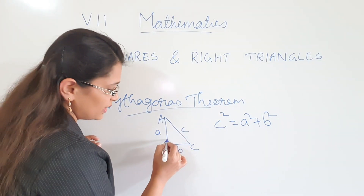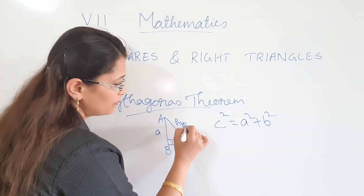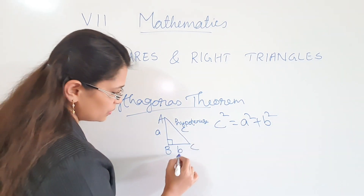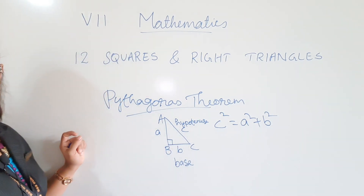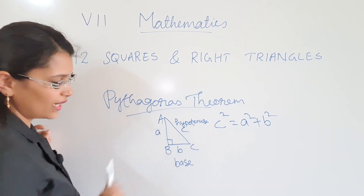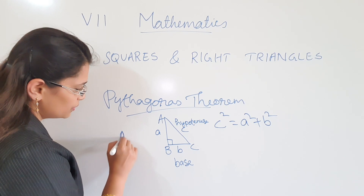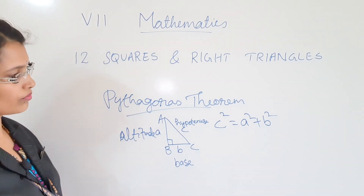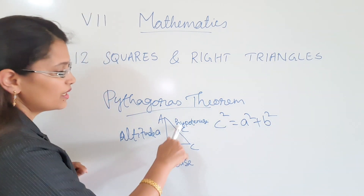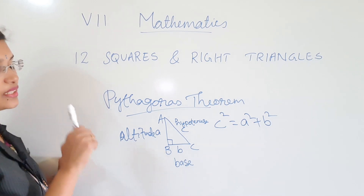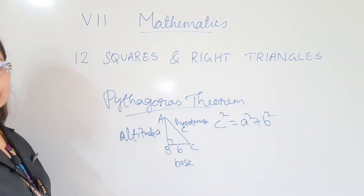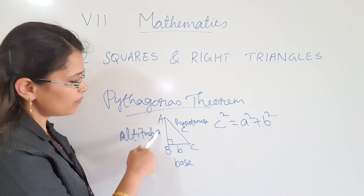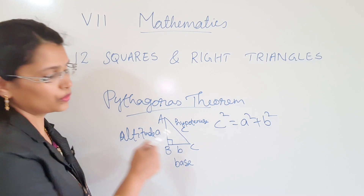That means this angle is 90 degrees. The side opposite to 90 degrees is the hypotenuse. BC is the base of this right-angled triangle, and AB is the height or altitude. So C square equals A square plus B square means hypotenuse square is equal to the sum of squares of the other two sides. Pythagoras theorem states that hypotenuse square is equal to the sum of squares of the other two sides.